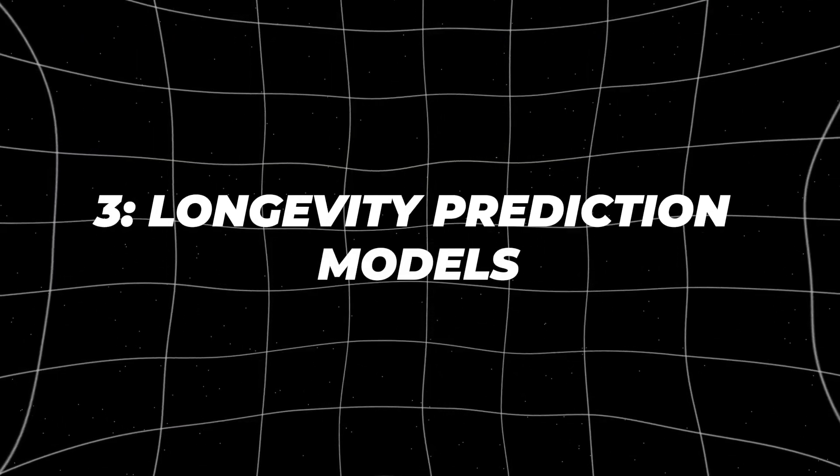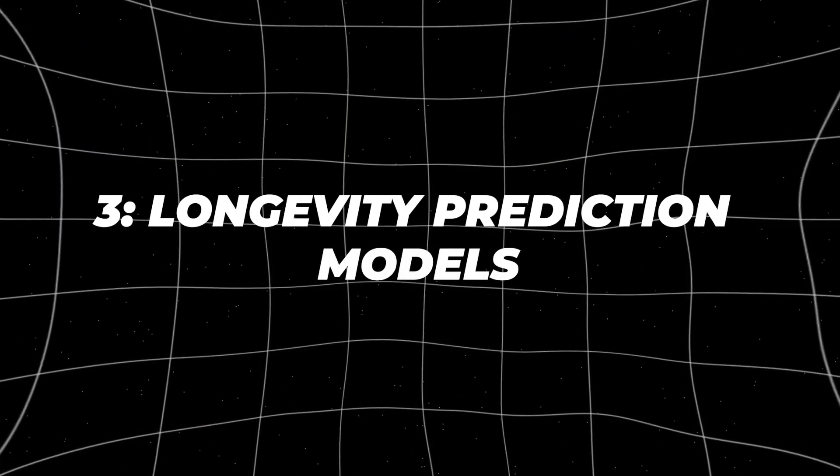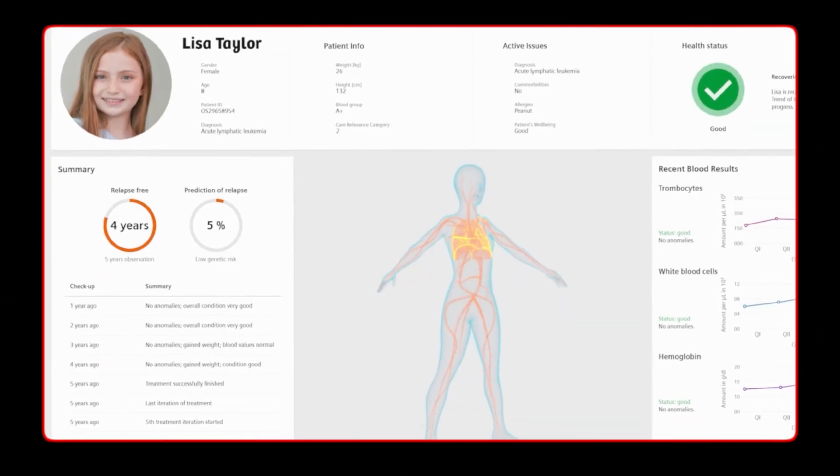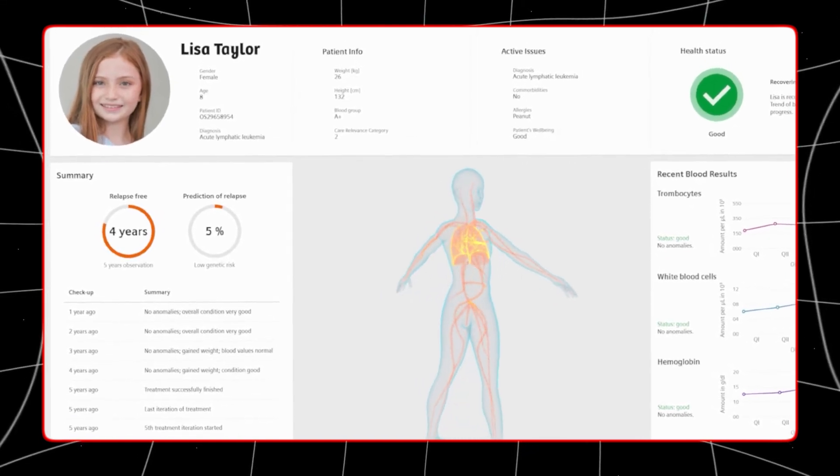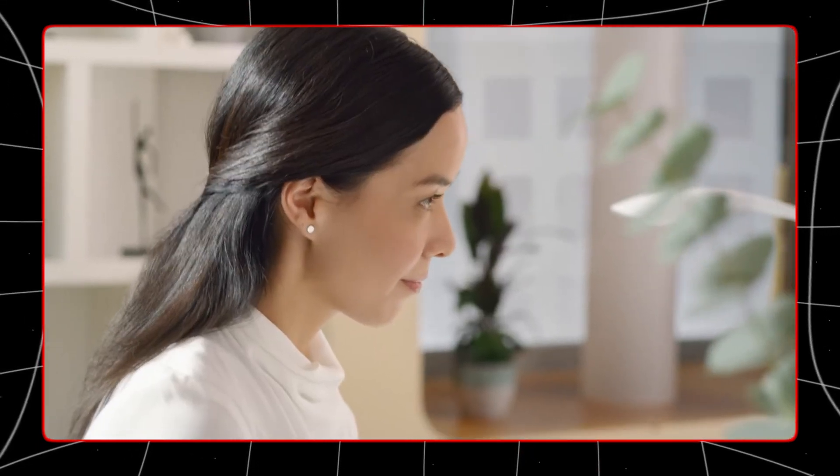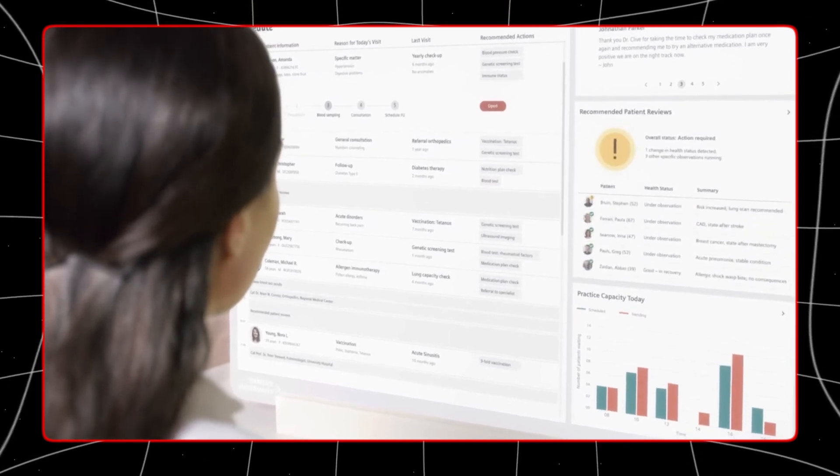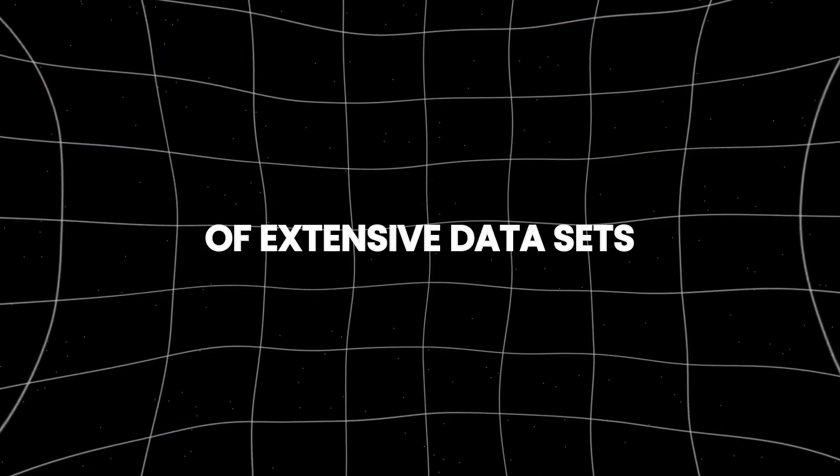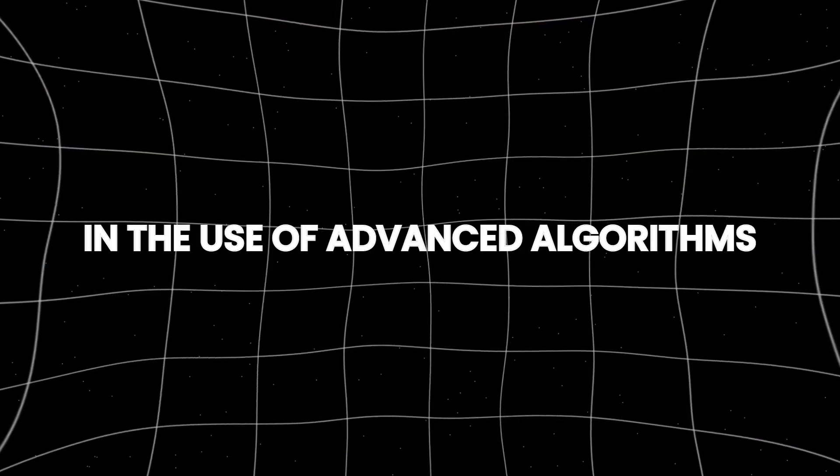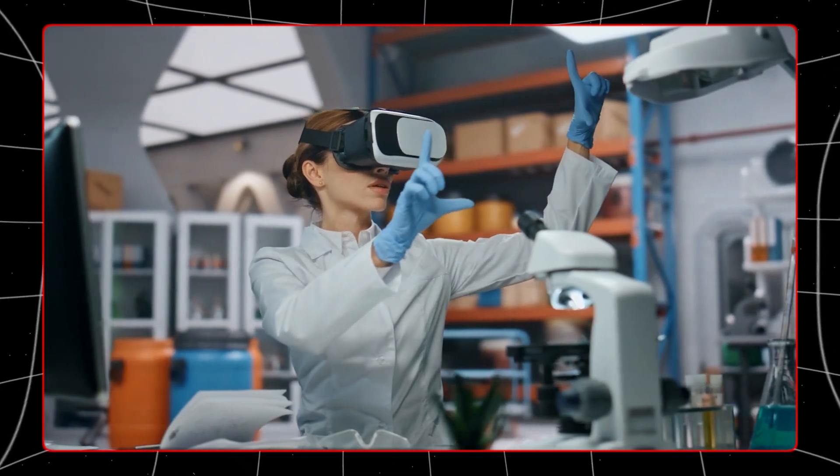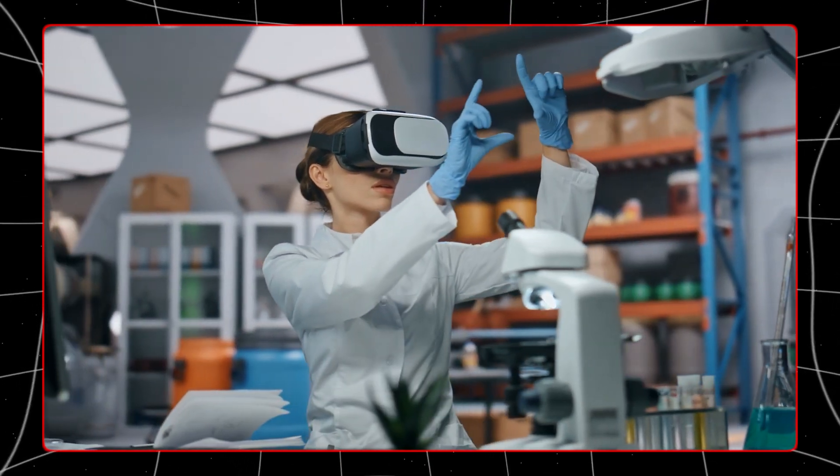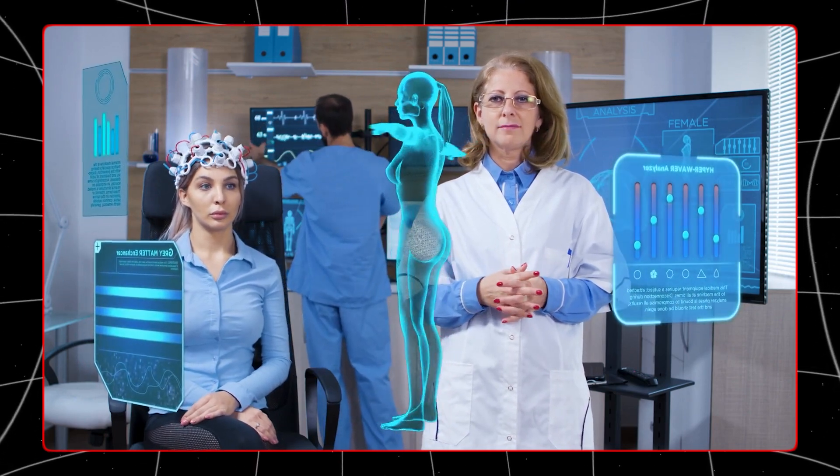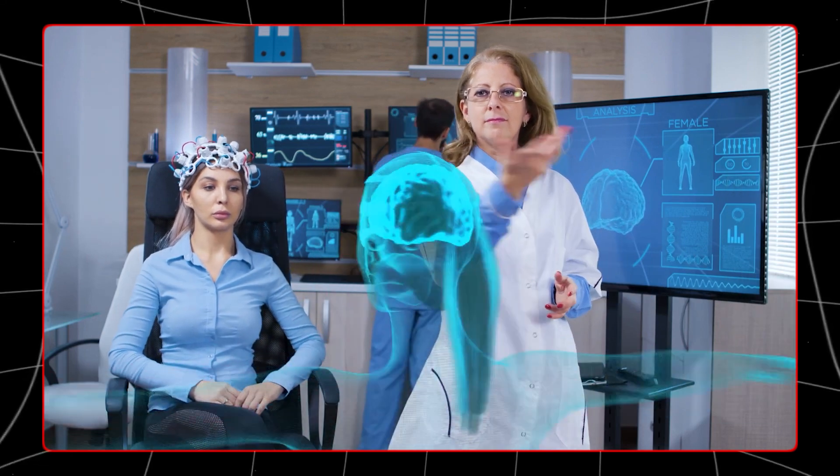Number 3. Longevity Prediction Models. Artificial intelligence-driven longevity prediction models provide valuable foresight into an individual's potential for reaching advanced stages by examining various factors such as genetics, lifestyle choices, and environmental influences. Through the integration of extensive data sets and the use of advanced algorithms, these AI models can precisely evaluate a person's chances of living longer, offering personalized predictions that facilitate proactive planning for both health and financial stability in the long run.